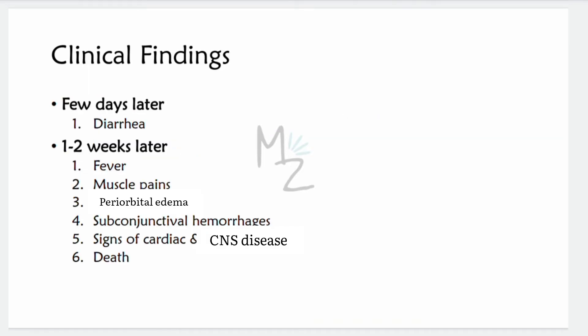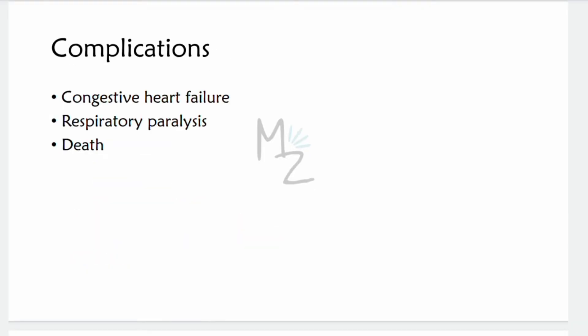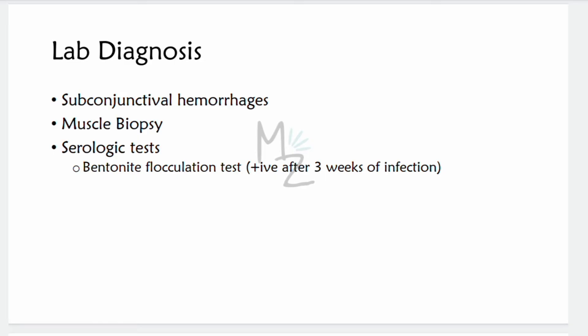Clinical findings: a few days after eating undercooked meat — usually pork — the patient experiences diarrhea and fatigue. One to two weeks later: fever, muscle pain, periorbital edema, and eosinophilia, which is prominent in nematode infections. Importantly, subconjunctival hemorrhages are an important diagnostic criterion. There can also be signs of cardiac and CNS disease, and ultimately death can occur.